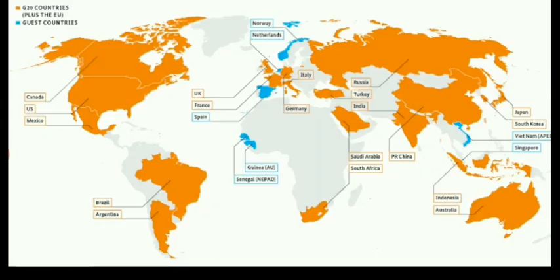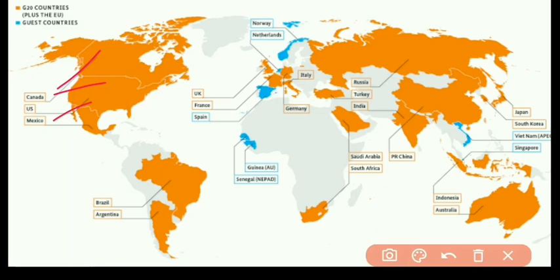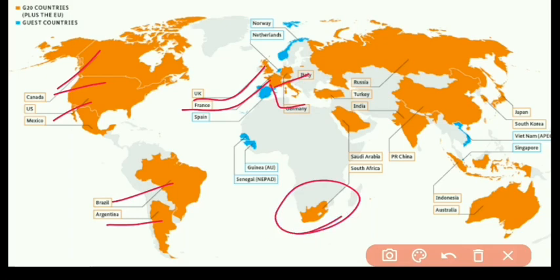Let's remember the countries continent-wise. From North America we have Canada, the US, and Mexico. In South America we have only two countries: Argentina and Brazil. Coming to Europe, we have the European Union and the countries France, UK, Germany, and Italy. In Africa, we have only South Africa as a member of G20.